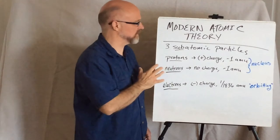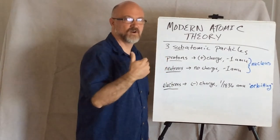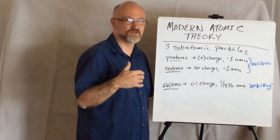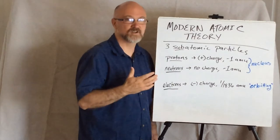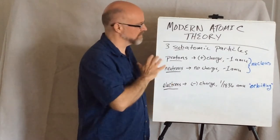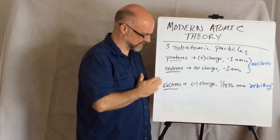We're going to do a quick review here that we now know, after a long process of hundreds of years of proposing ideas and then developing ways to gather more evidence, that atoms of every element are made up of three subatomic particles: protons, neutrons, and electrons.